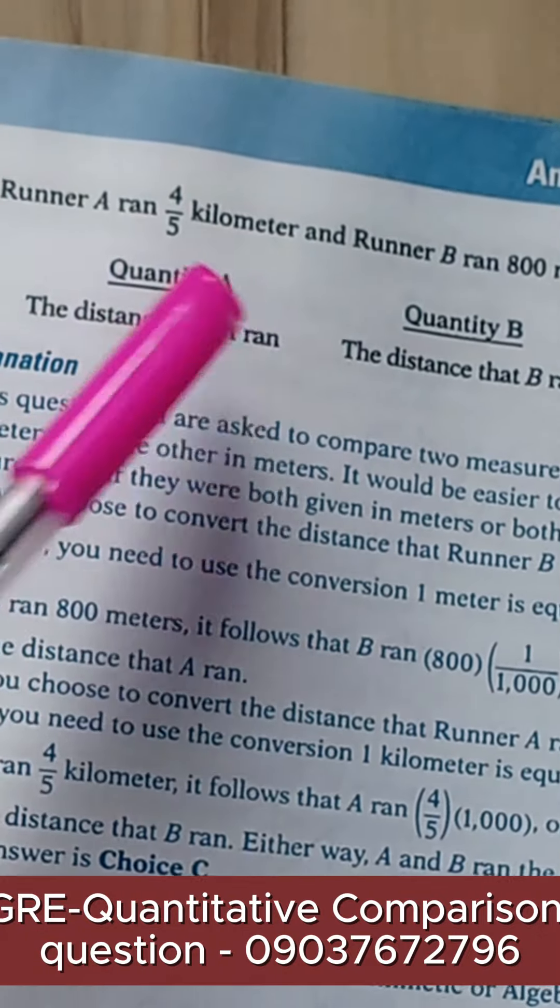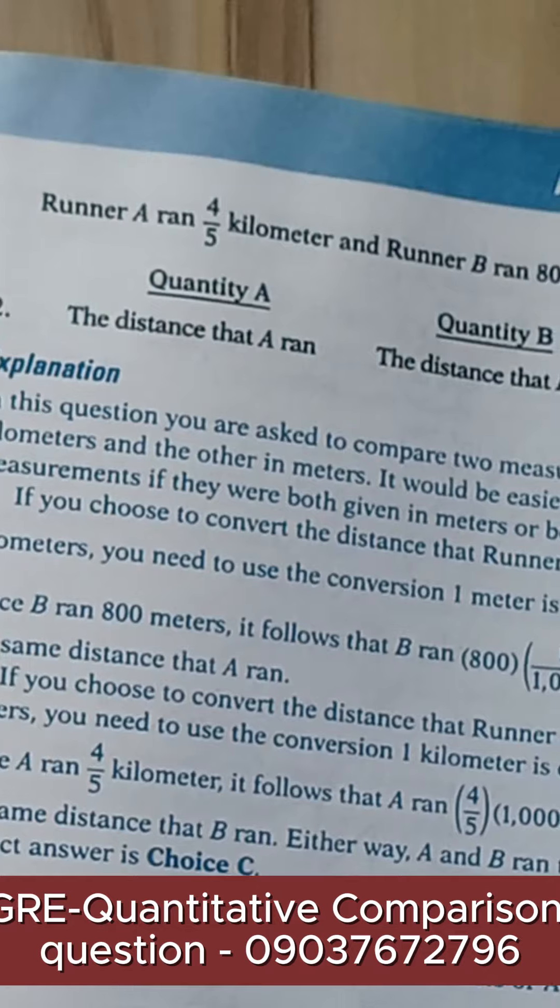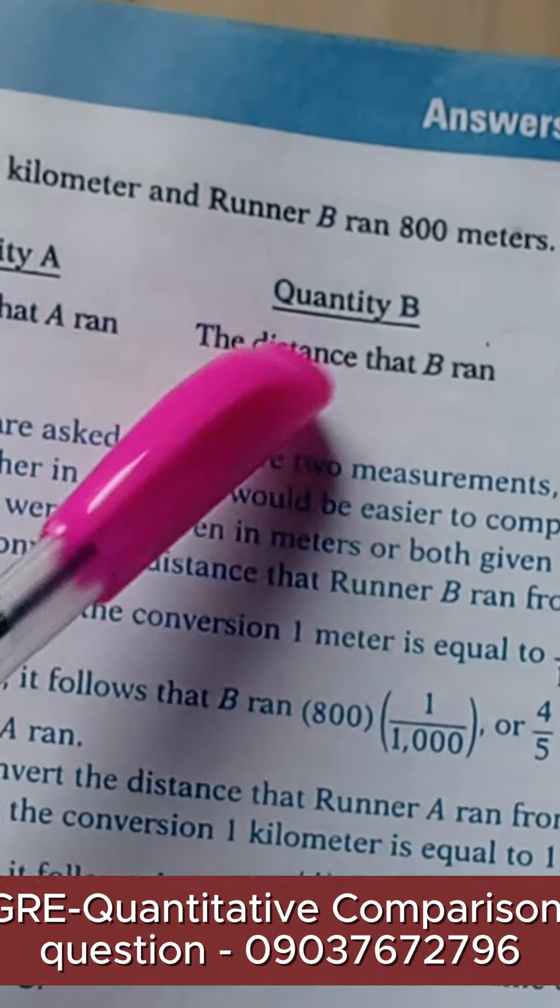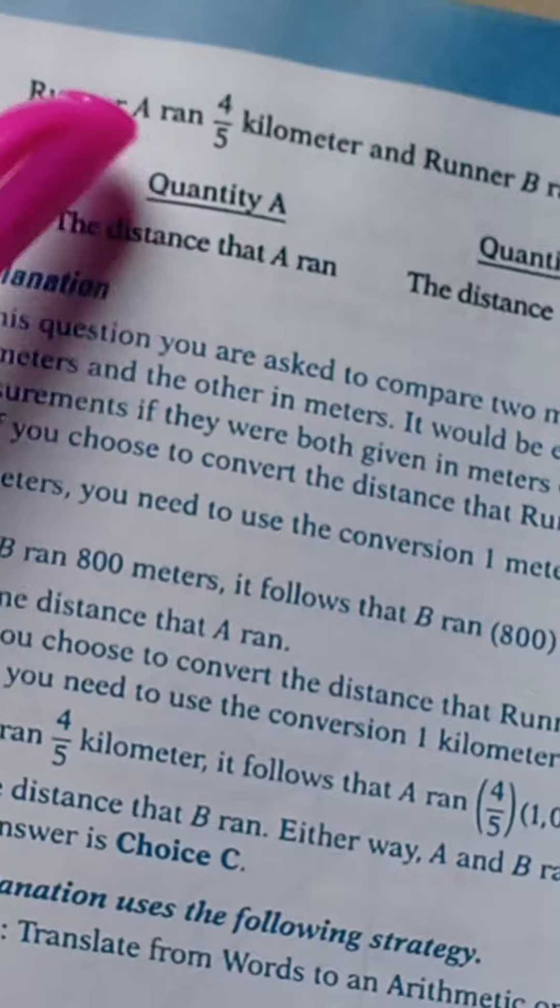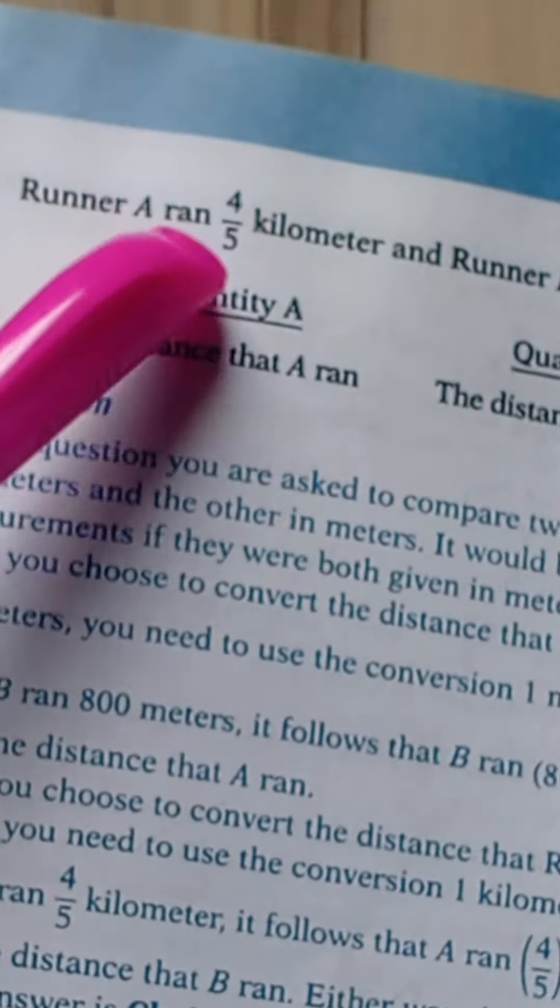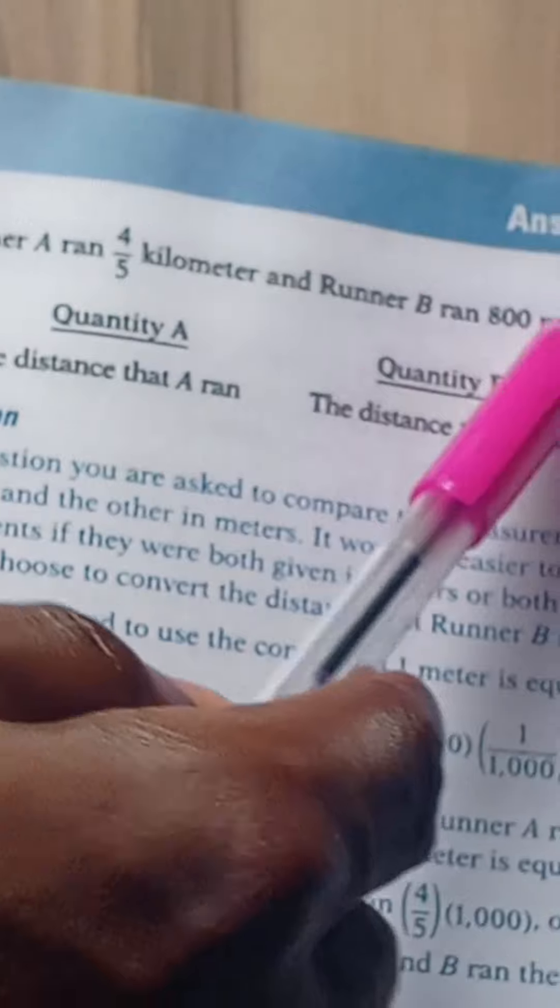Now quantity A says the distance that A ran and quantity B says the distance that B ran. They told us from here that runner A ran 4/5 kilometer and runner B ran 800 meters.